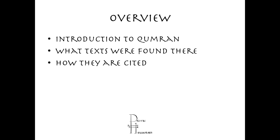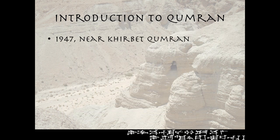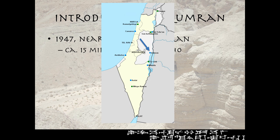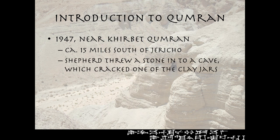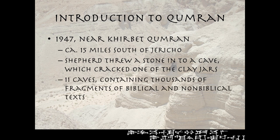In 1947, near Kirbet Qumran - as the story goes, 15 miles south of Jericho, right about here - there was a shepherd who was wandering around these caves and threw a stone into one of the caves. He was surprised when he heard a cracking sound of a clay jar, and when he went to investigate he found clay jars containing biblical and non-biblical manuscripts in Hebrew.